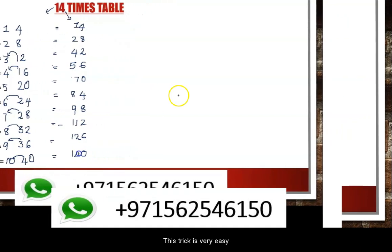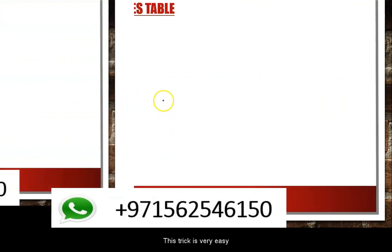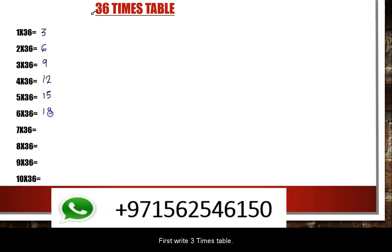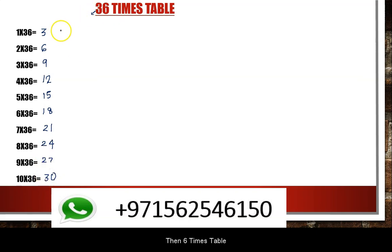This is a very easy trick. Now we have the 36 times table. We have the 3 times table: 3, 6, 9, 12, 15, 18, 21, 24, 27, 30.